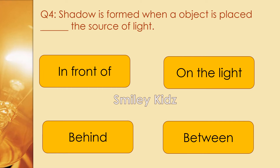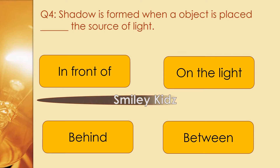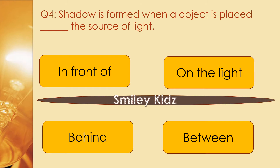Question number 4. A shadow is formed when an object is placed dash that is the source of light. Options are in front of, on the light, behind, and between.